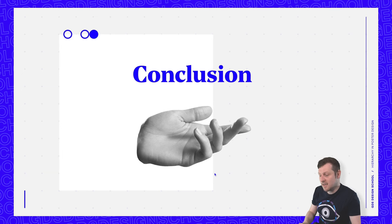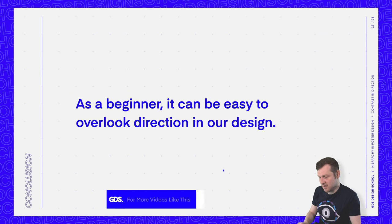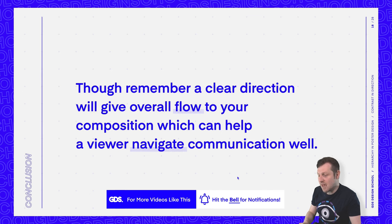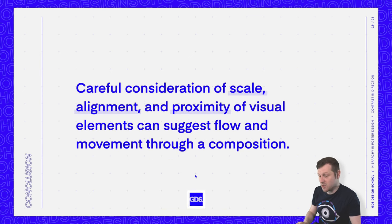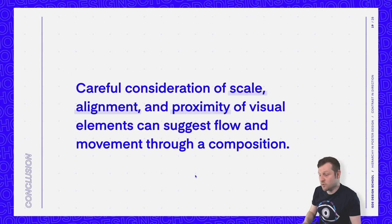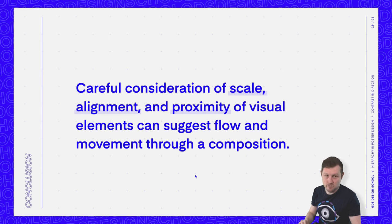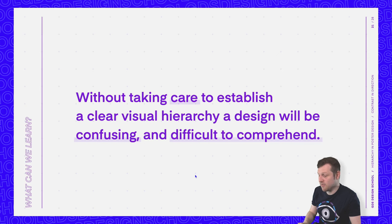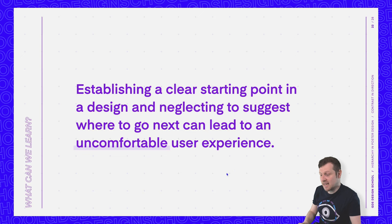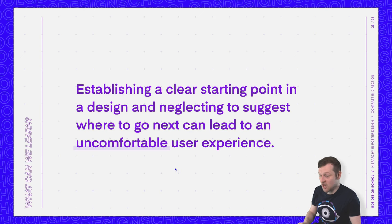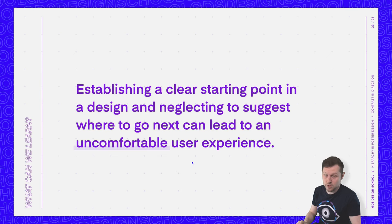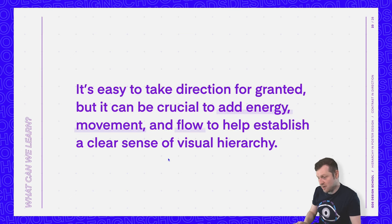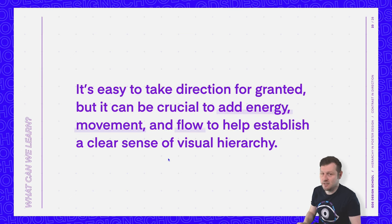So in conclusion, as a beginner, it can be easy to overlook direction in our design. Though remember, a clear direction will give overall flow to your composition, which can help a viewer navigate communication well. Careful consideration of scale, alignment, and proximity of visual elements can suggest flow and movement through a composition. Without taking care to establish a clear visual hierarchy, a design will be confusing and difficult to comprehend. Establishing a clear starting point in a design and neglecting to suggest where to go next can lead to an uncomfortable user experience. It's easy to take direction for granted, but it can be crucial to add energy, movement, and flow to help establish a clear sense of visual hierarchy.